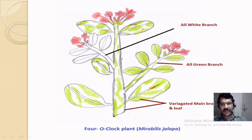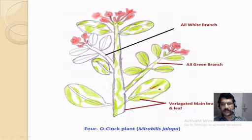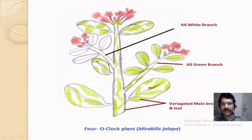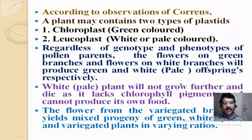This is the sketch of our plant Mirabilis jalapa, containing green branches, white branches, and a variegated main branch with leaves having variegated colors — patches of chloroplast and leukoplast present.